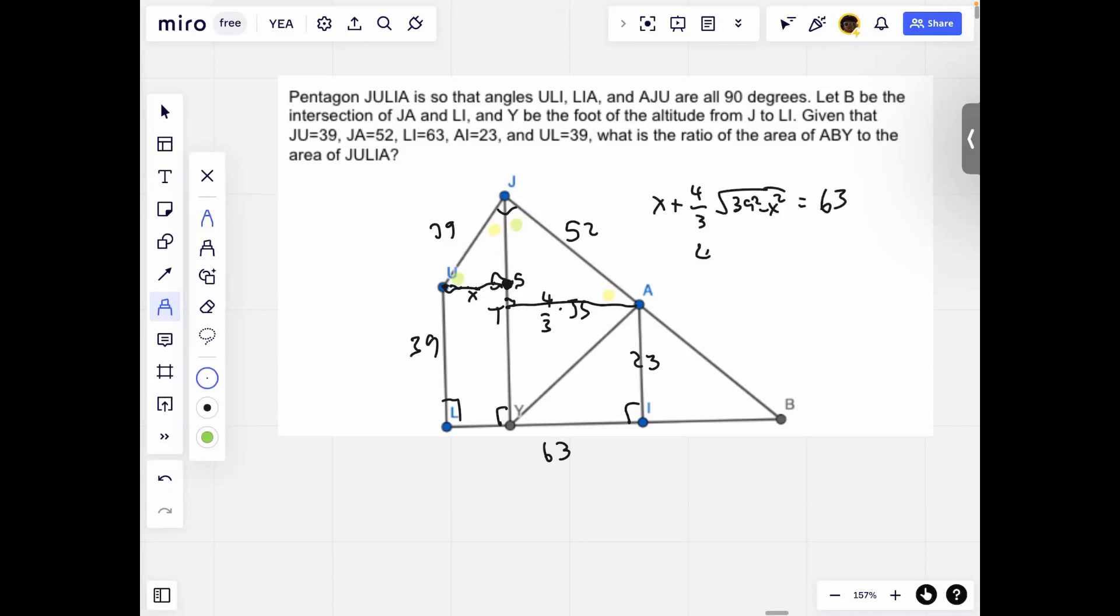So now we have 4 square root of 39 squared minus X squared equals 189 minus 3X. After this, we can square both sides. And then after doing some calculation, we actually get that X equals 15.